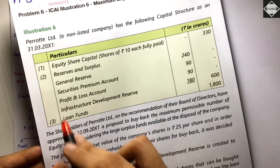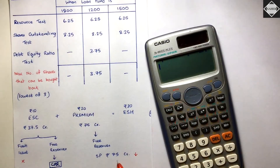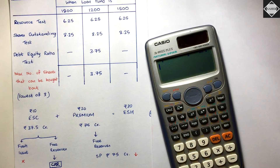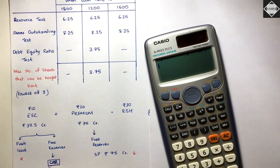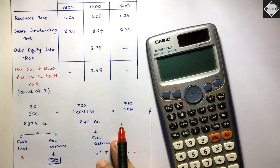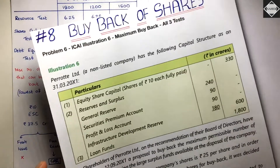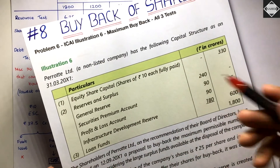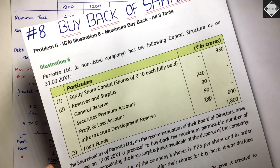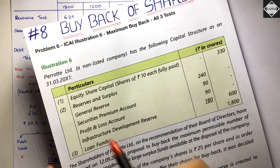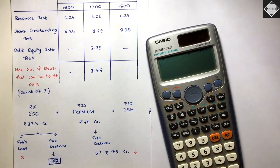Step 1: Write off the premium on buyback of 75 crores. The first priority is always Securities Premium. Securities Premium available = 90 crores, so we utilize 75 crores from it. Step 2: Create CRR of 37.5 crores to replace cancelled capital. Transfer from General Reserve (GR) to CRR — the study material uses GR, though P&L is also permissible. General Reserve balance is 240 crores, so 37.5 crores can be taken from it.